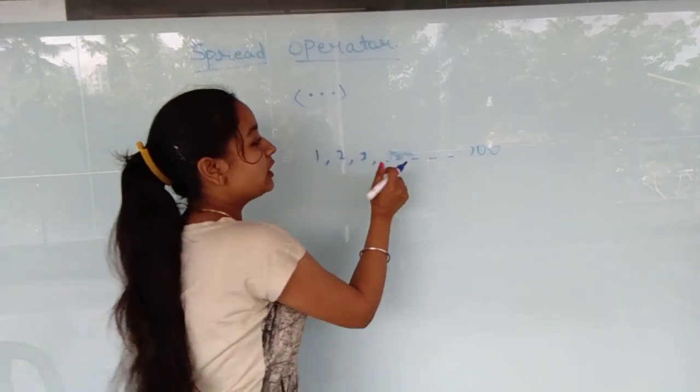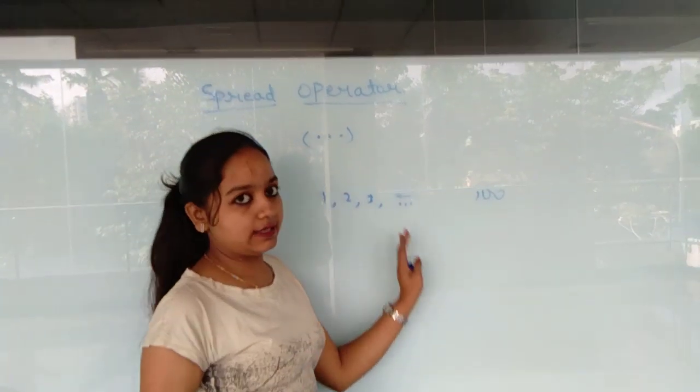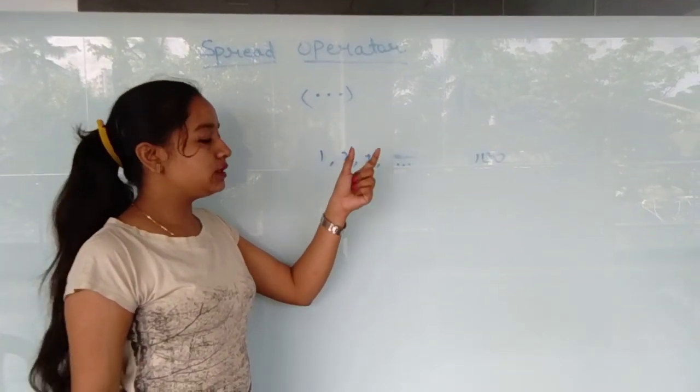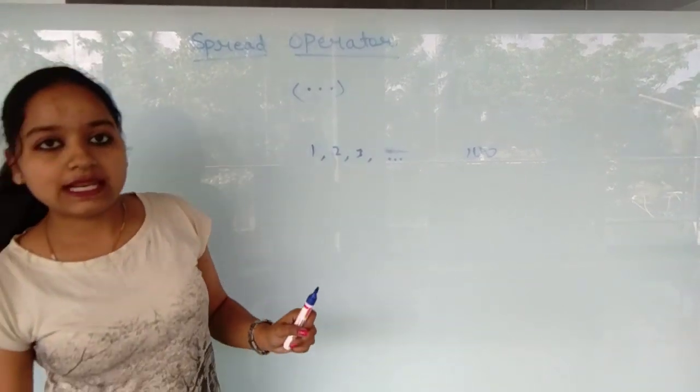So that's why we use three dots and write the last digit. So it will mean that the numbers which are there should be included in the array. So let us see the syntax.